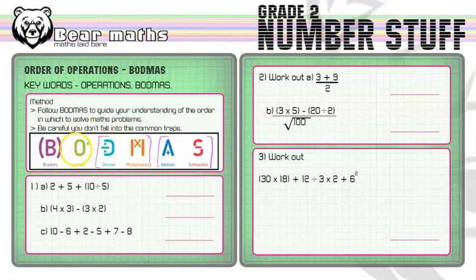So question 1a is 2 plus 5 plus 10 divided by 5. Now there's some brackets in it so we do 10 divided by 5 and that will give us 2 and then what we do is we write out the problem again and then we just see what we've got left and we're just adding so we can just add from left to right so 2 plus 5 is 7 plus 2 is 9. So our final answer to that question there is 9.